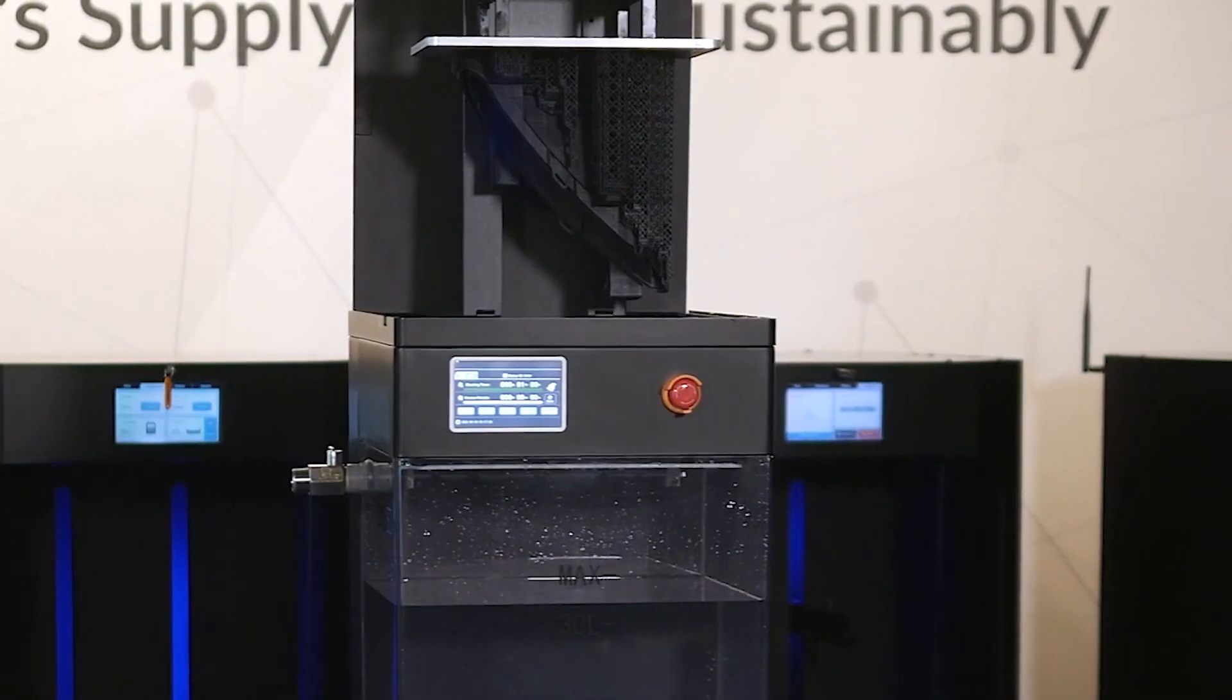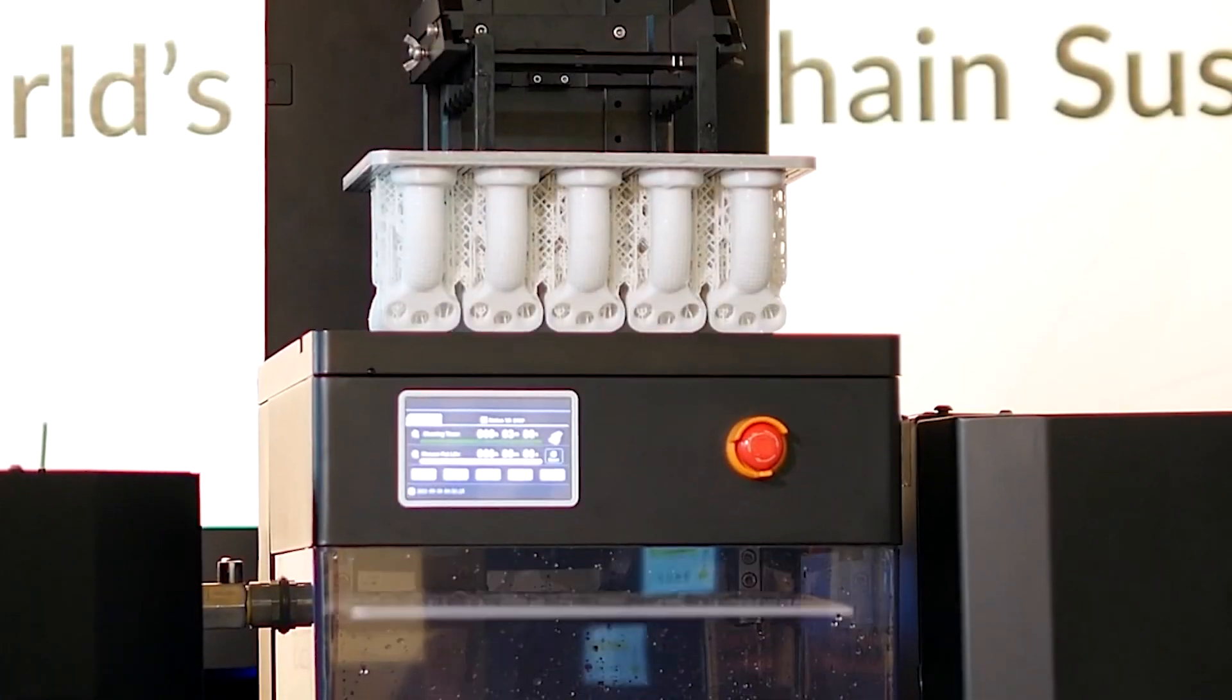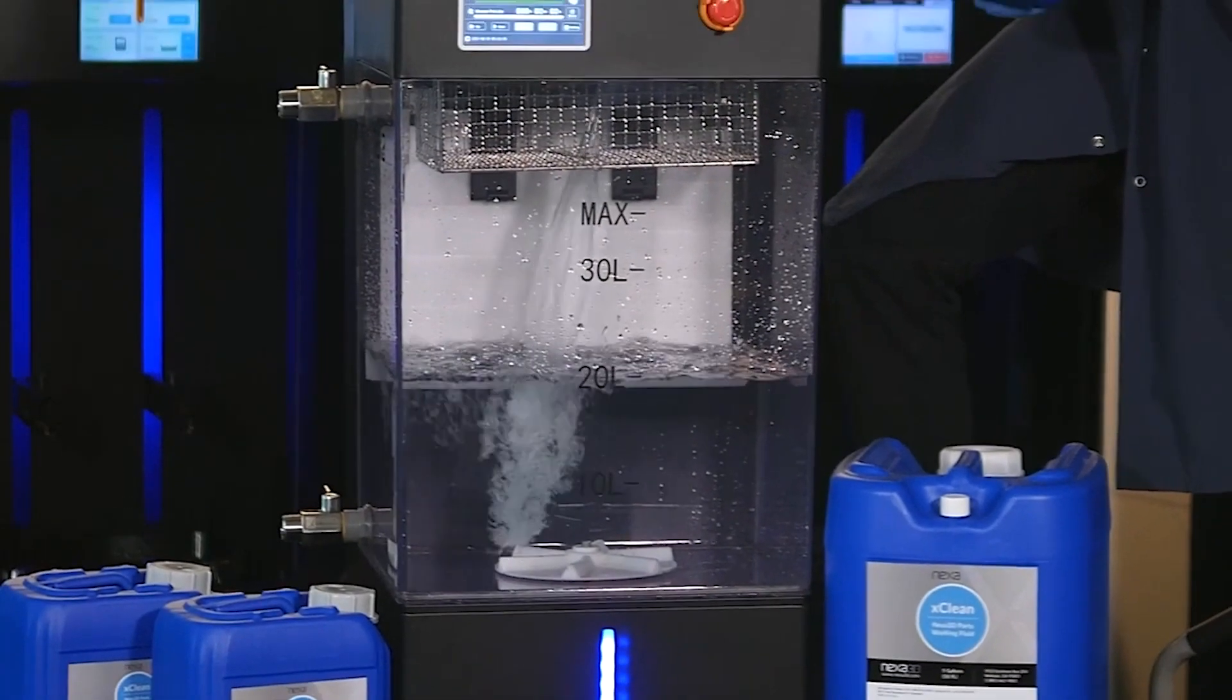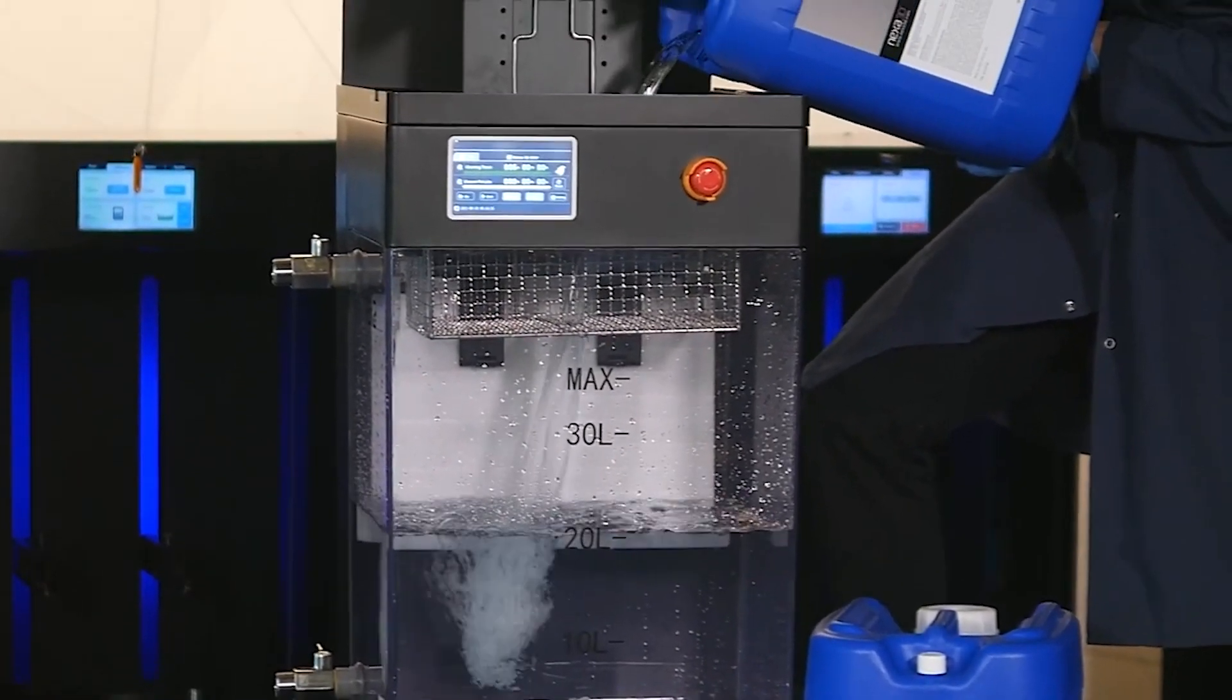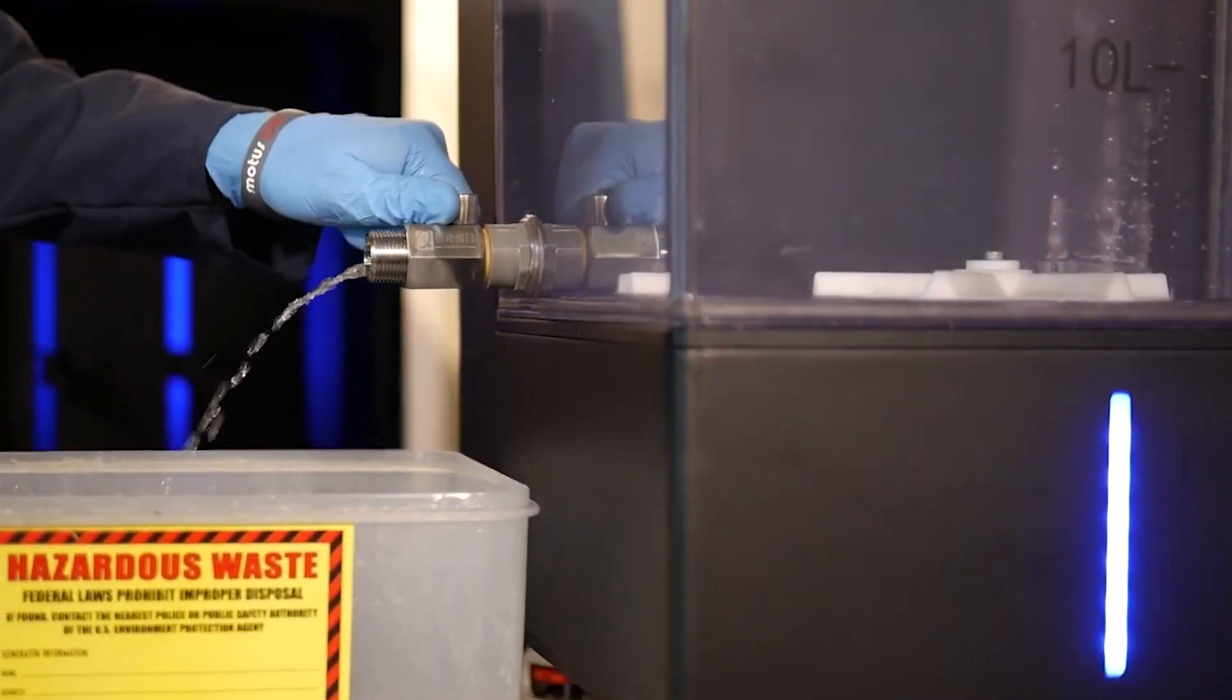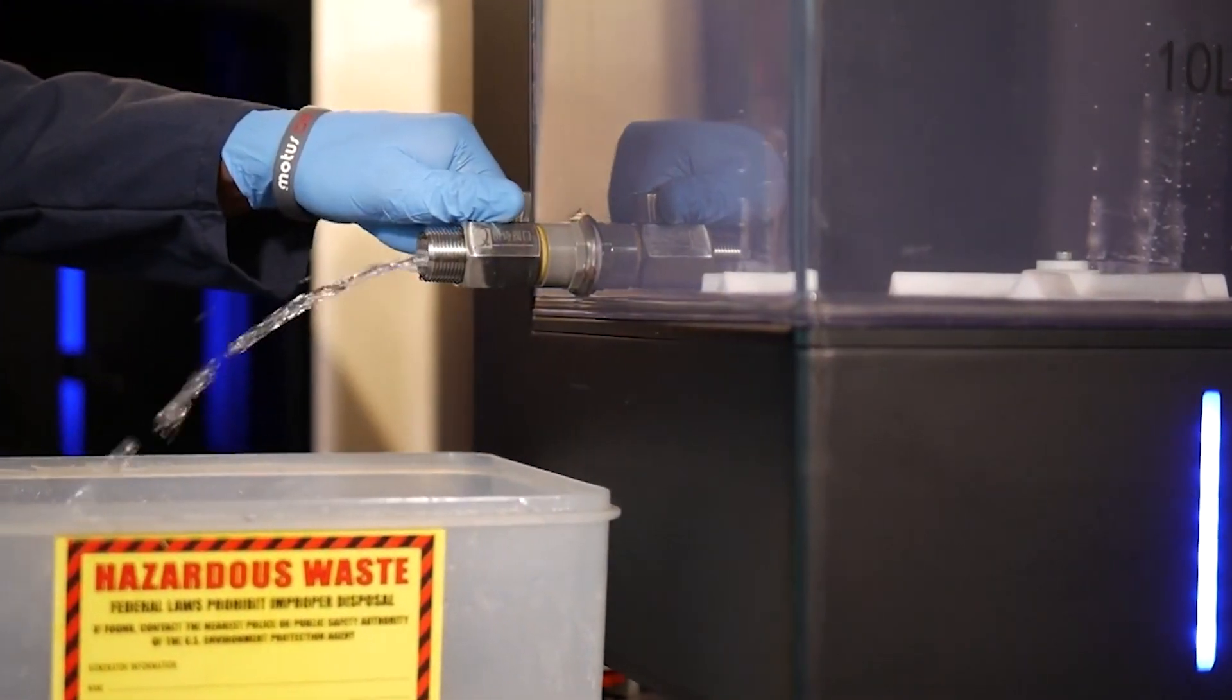The X-Wash chamber accepts any print size that NXE 400 sends its way. Holding over 10 gallons of X-Clean sustainable washing detergent, go hundreds of jobs between detergent changes and cut your cleaning costs by as much as 75%.